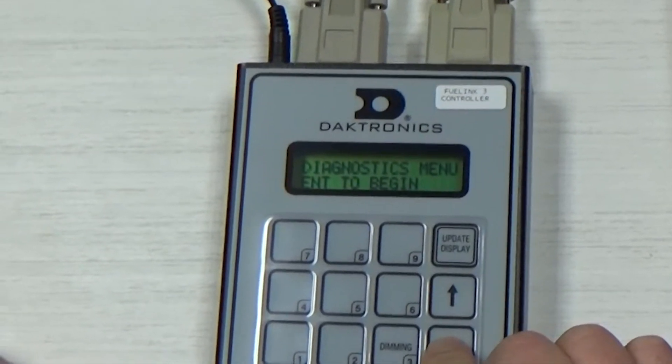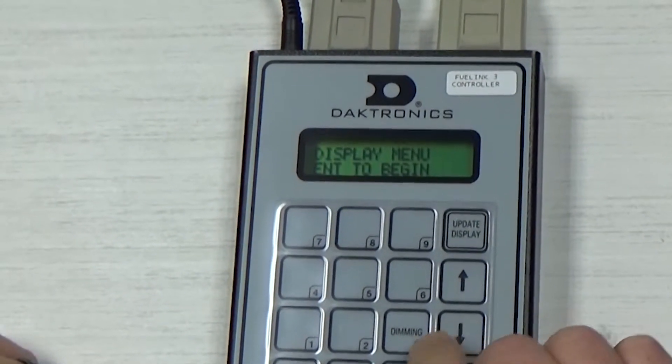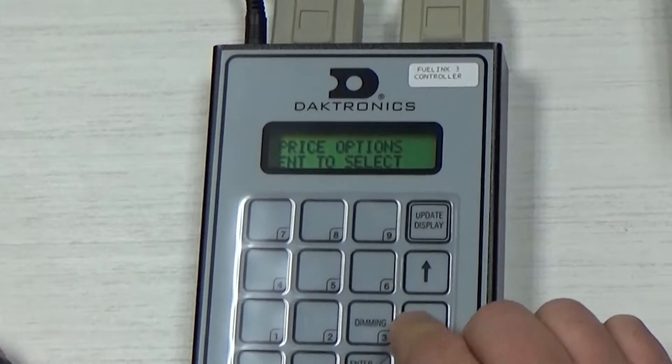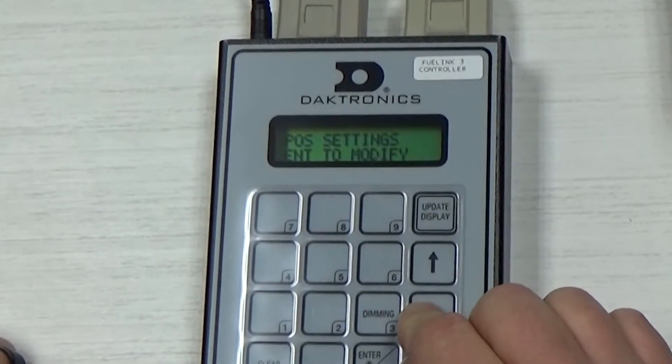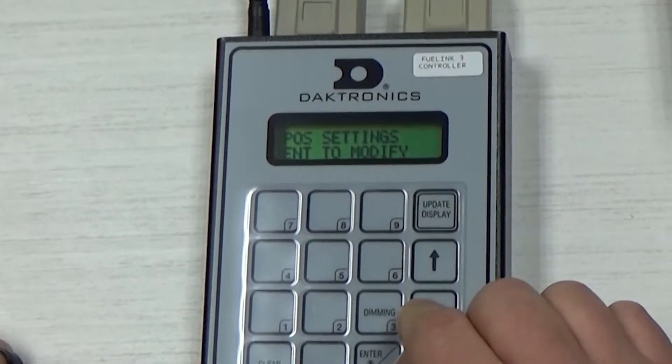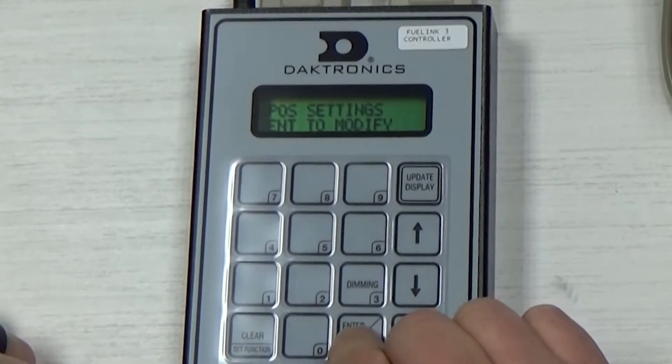Step 2: Using the arrow buttons, scroll down to display menu and press enter. Step 3: Using the arrow buttons, scroll to POS settings and press enter.